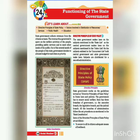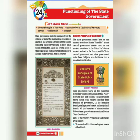The state government works on the guidelines termed as Directive Principles of State Policy. The administration and laws must follow these directive principles. The government has to ensure social welfare. The state has three branches: the executive branch, the legislative branch, and the judicial branch. All branches follow the set procedure as mentioned in the state constitution.